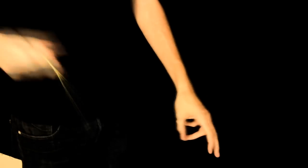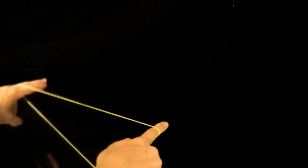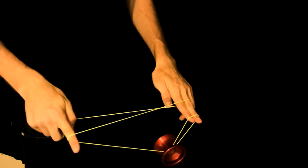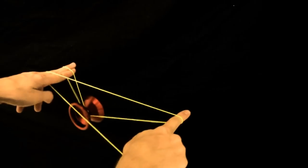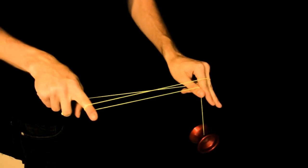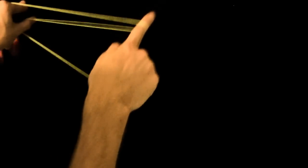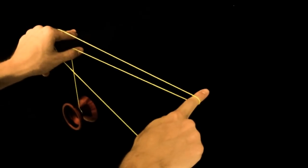Start by throwing a double or nothing with your non-throw hand using your index and middle finger together. Insert your non-throw hand thumb into the middle of the string formation. Pop the yoyo off the string towards your non-throw hand side and catch the string with your wading thumb.